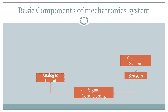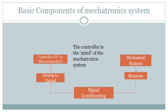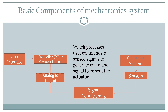After conversion to digital form, we are able to present this information to the controller. The controller is the mind of the mechatronics system — it processes user commands and sends signals. The controller may receive input from sensors, or a user can interface with it directly to check values and generate commands. It then generates a command signal to be sent to the actuator.